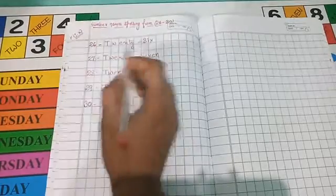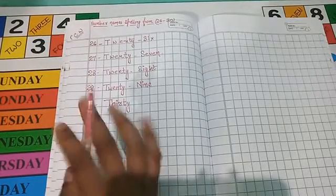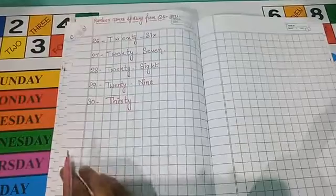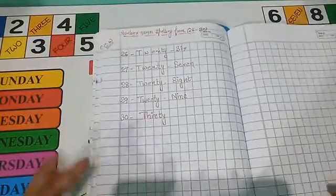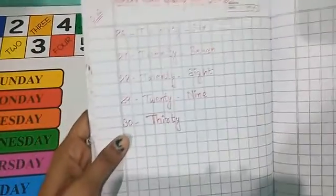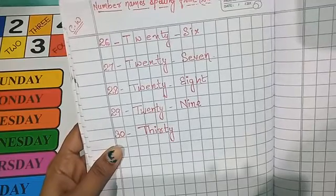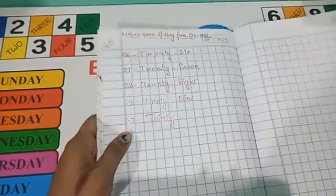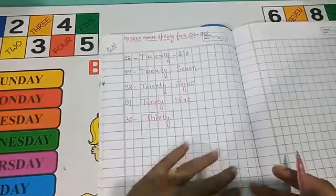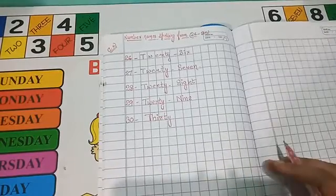So, from 26 to 30 number, we have completed. You have to learn these numbers, you can see it. You have to learn it. So students, please repeat once more after me.